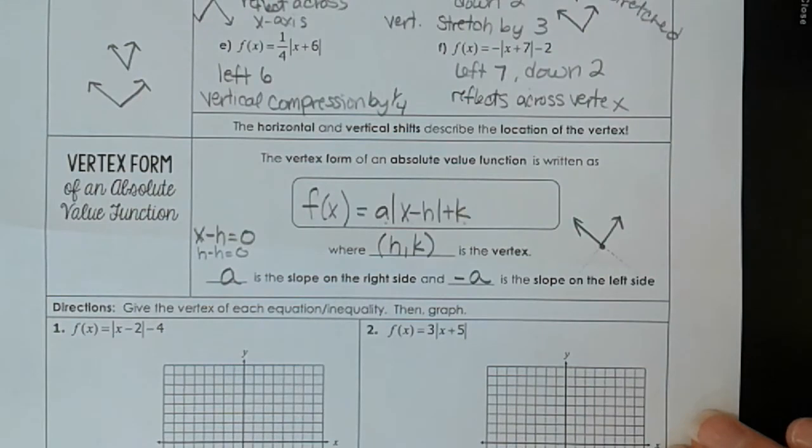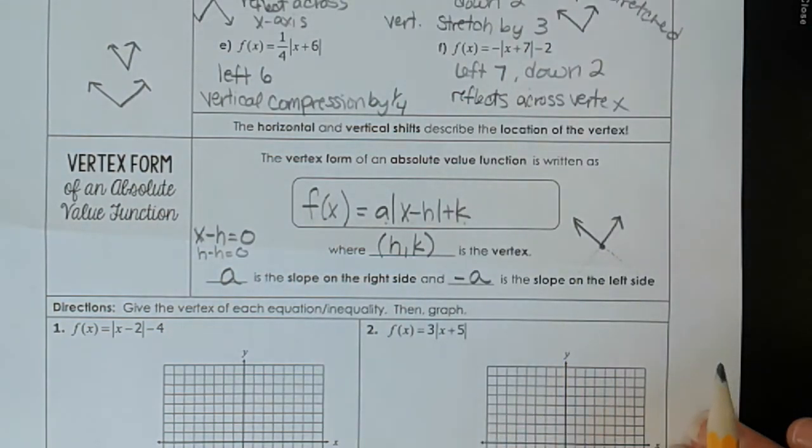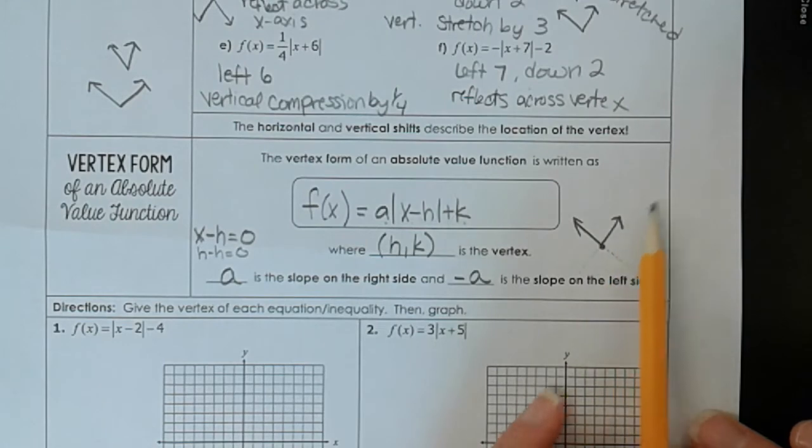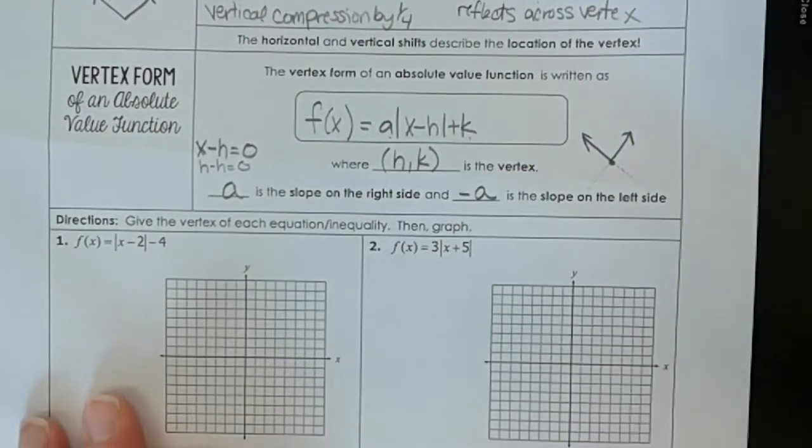Because this is a negative slope. Remember really an absolute value is just a piecewise function where we just keep these pieces and get rid of those pieces of the lines. So a represents the slope of the right side, negative a is the slope of the left side, and then h, k is our vertex.